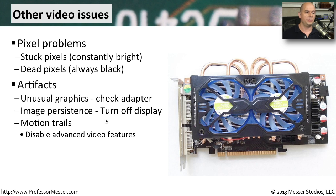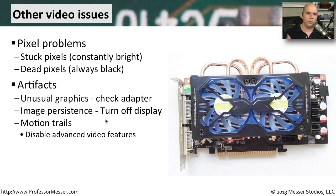You might also run into image persistence, where you turn off the display but you're still seeing images on the screen. That can happen if a particular image has been displayed all the time — the LCDs are so used to being on that image that they can't change very quickly. Usually if you power off your LCD display, it will remove those persistent images, and everything will eventually get back to looking normal.